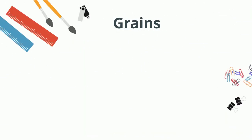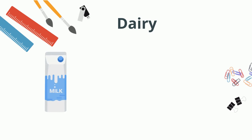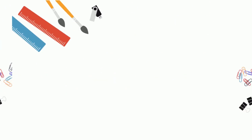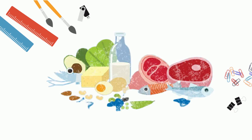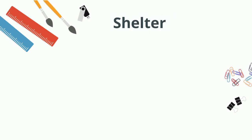Vegetables like potato, brinjal, spinach, cucumber, etc. Meat like beef, mutton, chicken, fish, etc. Grains like wheat, rice, barley, etc. Dairy like milk, yogurt, cheese, etc. Each type of food provides lots of different benefits to our body.